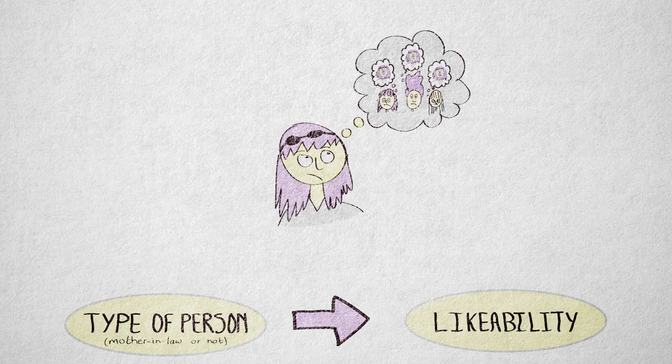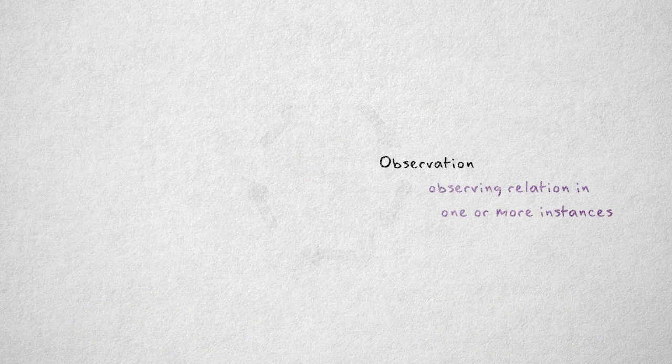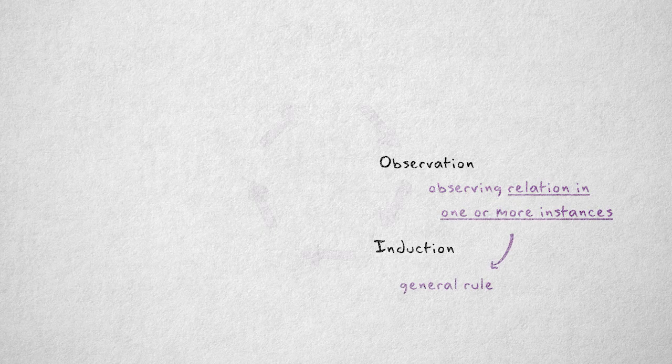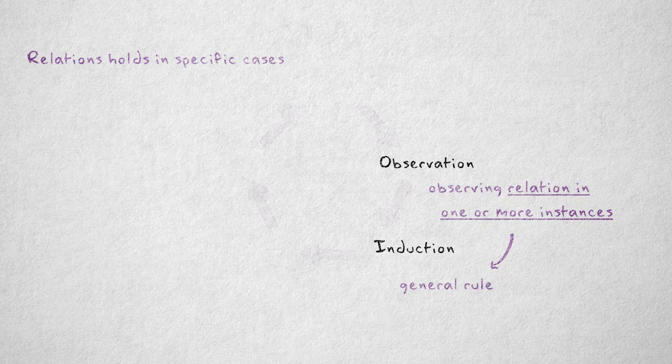The observation phase is about observing a relation in one or more specific instances. In the induction phase, this relation, observed in specific instances, is turned into a general rule. That's what induction means—taking a statement that's true in specific cases and inferring that the statement is true in all cases. Always.